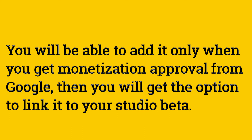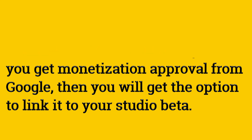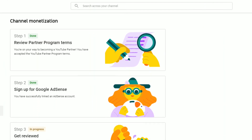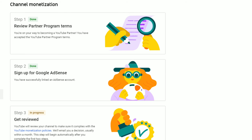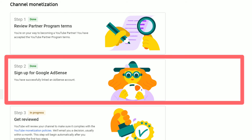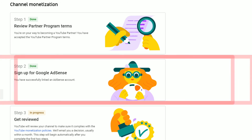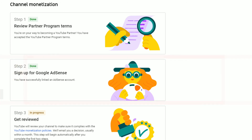You will be able to add it only when you get monetization approval from Google — then you will get the option to link it in YouTube Studio. After that, you can see 3 steps, and in the second step you can create a new AdSense account or link an existing old account.